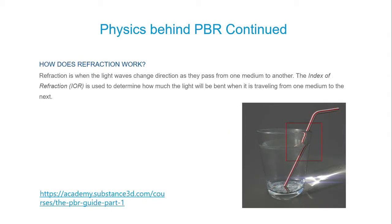How does refraction work? We've all seen the image of the straw — when we put a straw in a glass, it looks bent. Refraction is when a light wave changes direction to pass through a piece of glass from one medium to another. This is determined by the index of refraction, which we're going to look at in Revit. We can dial in these values, but they're already pre-set in Revit — thank you Autodesk — so we didn't have to go find index of refractions for certain types of materials.